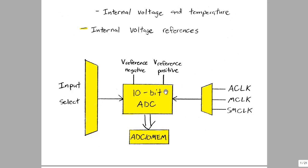So the conversion takes about 13 clock cycles to complete. And once it's done, the result is stored in the ADC10MEM register. And then the process continues again.